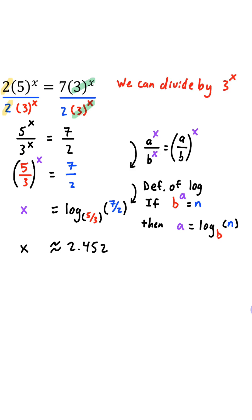Do note, we can divide by 3 to the power x, since 3 to the power x is greater than zero, or particularly, 3 to the power x is not zero. So this stuff is valid. Thank you.